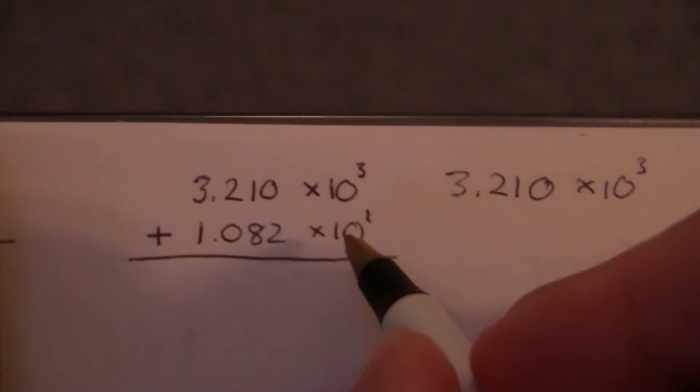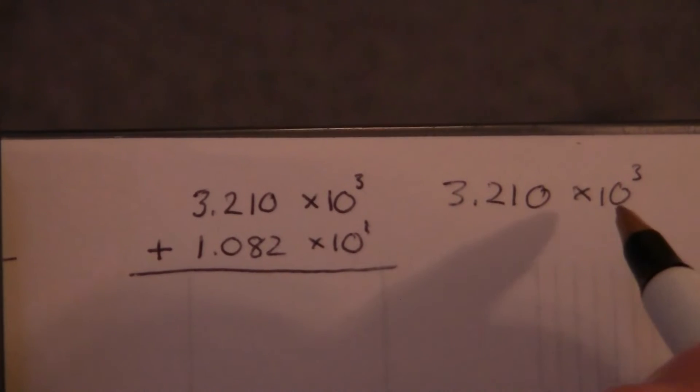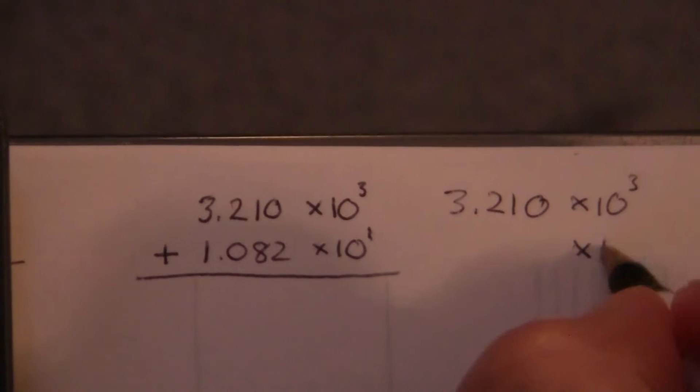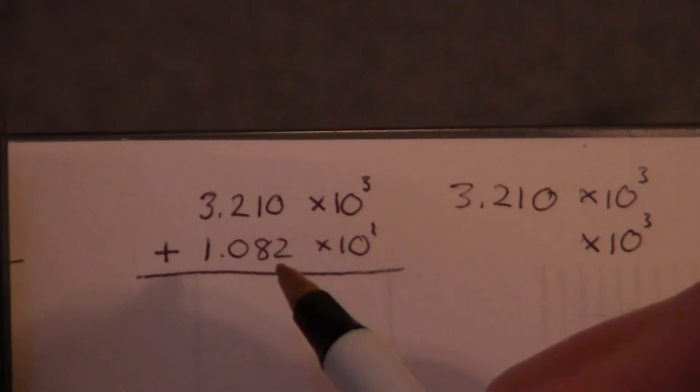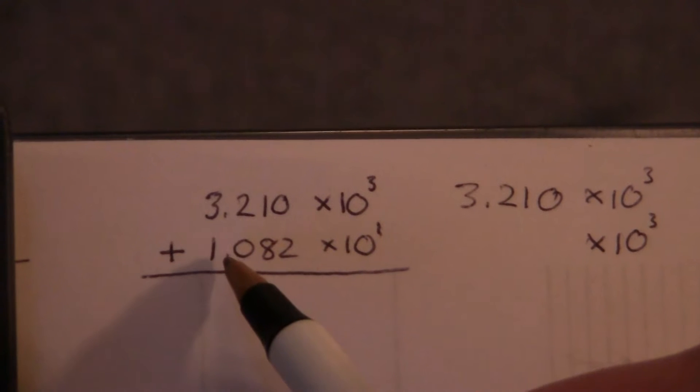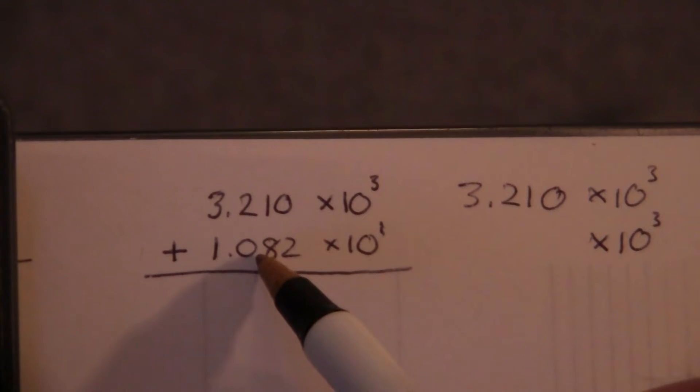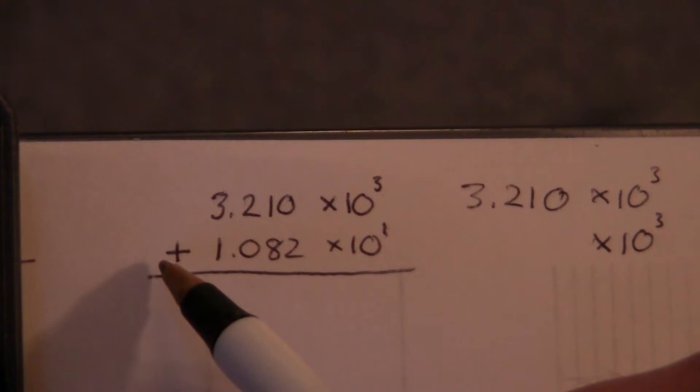And then this one, we're going to change. Basically what we want to say is what number times 10 to the 3rd, because I want that part there, so I can go ahead and write that. I'm going to have some number times 10 to the 3rd that will give me this same value times 10 to the 1. So let's look at it this way. If I have to move this one place to the right there, that's the same as moving it three places to the right from 0.001, right? Or 0.01.